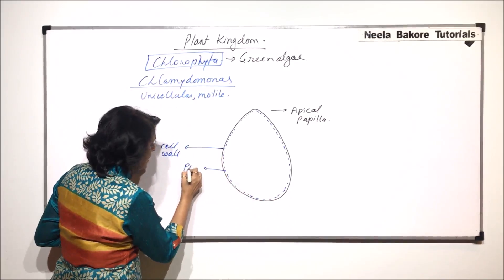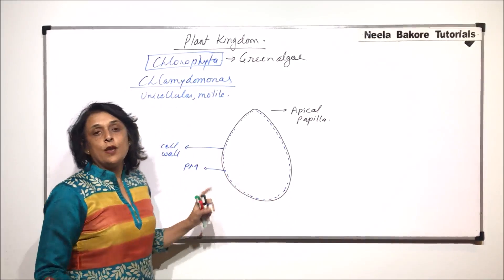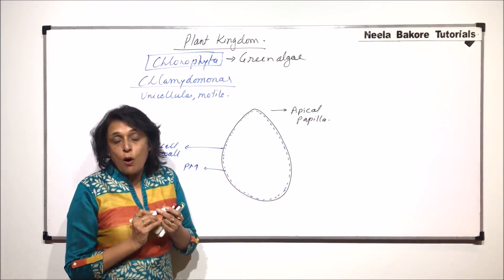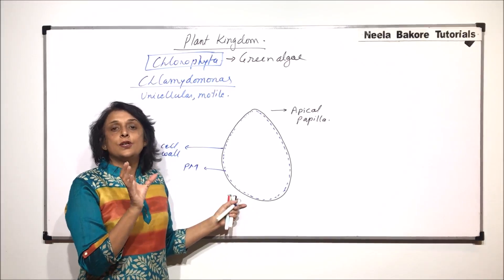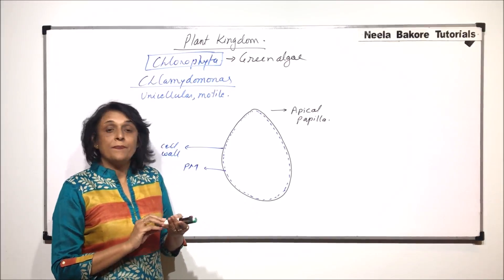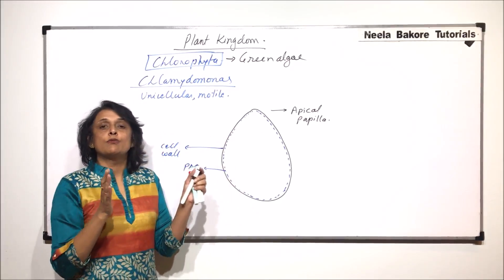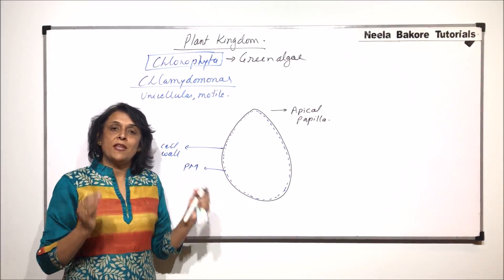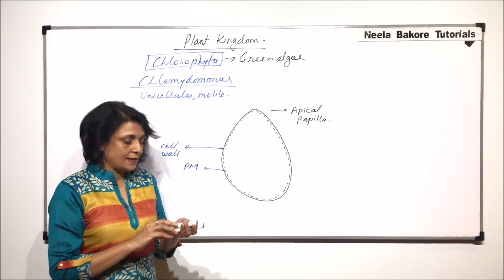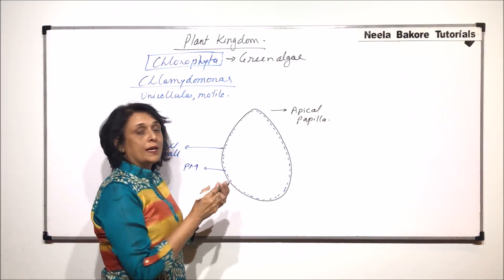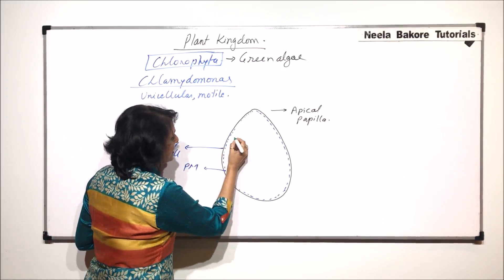This dotted line is plasma membrane. If you remove the cell wall, the remaining structure is known as protoplast. This cytoplasm inside is distributed into two parts: peripheral cytoplasm and central cytoplasm.